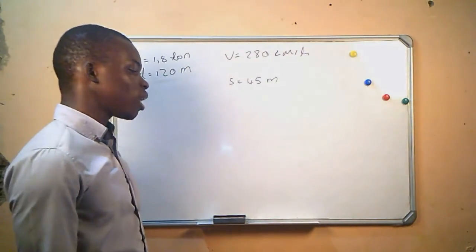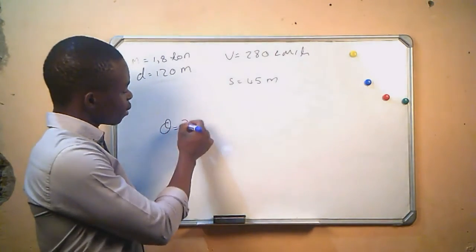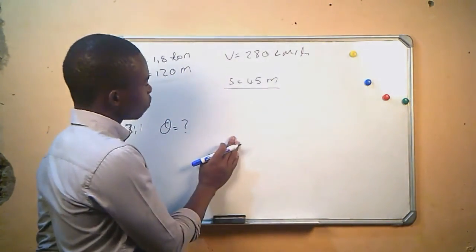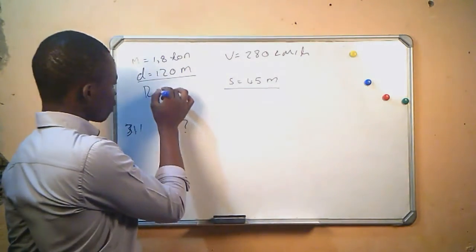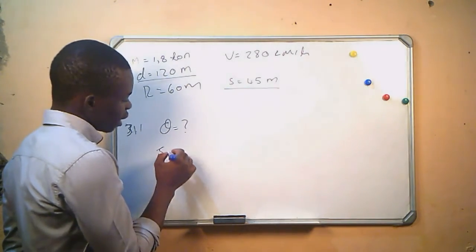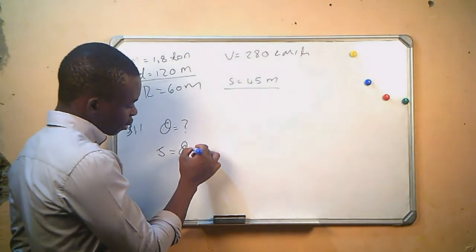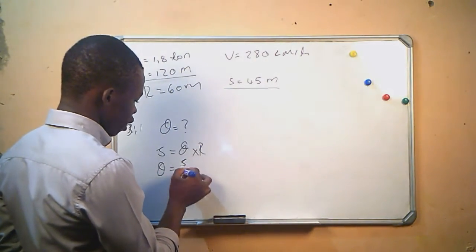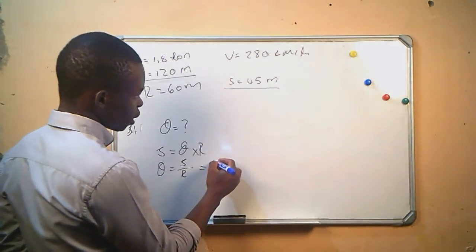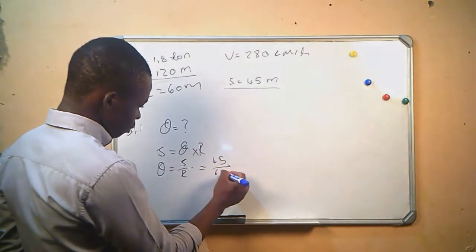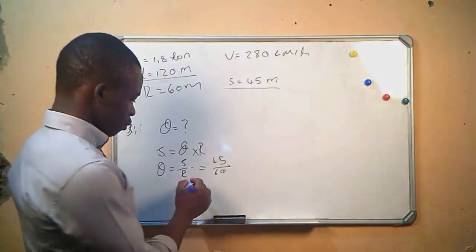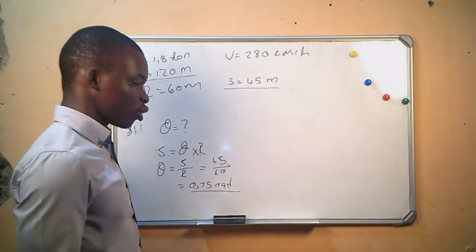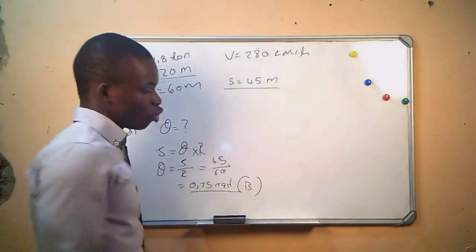The first question asks for the angular displacement of the car. The angular displacement theta uses formula 3.1.1. Since we have the linear displacement and the diameter of the track, we can get the radius, which is 60 meters. We use the formula: linear displacement S equals angular displacement theta times radius R. Making theta the subject gives theta equals S divided by R, which is 45 divided by 60, giving an angular displacement of 0.75 rad. This corresponds to answer B.